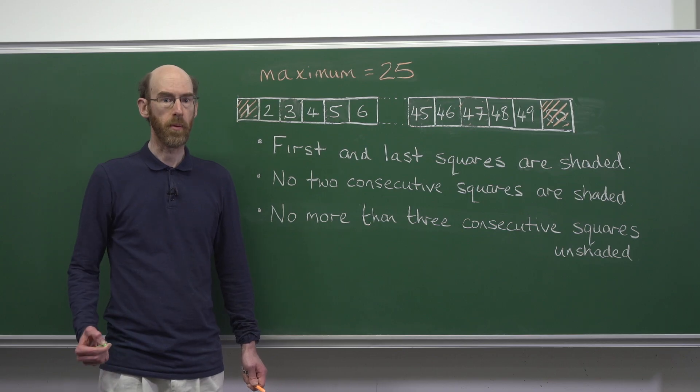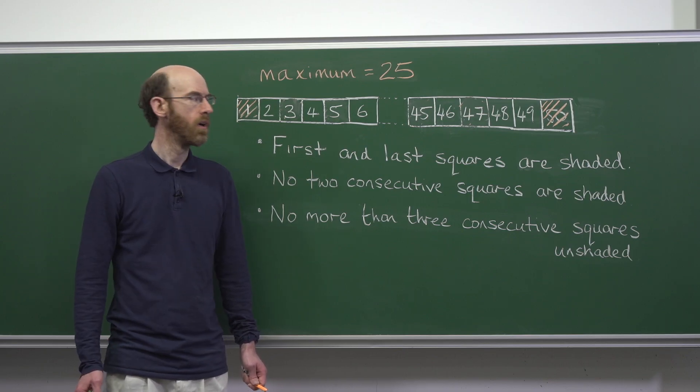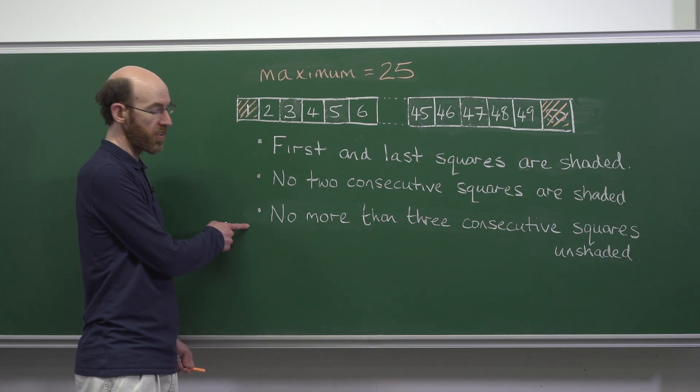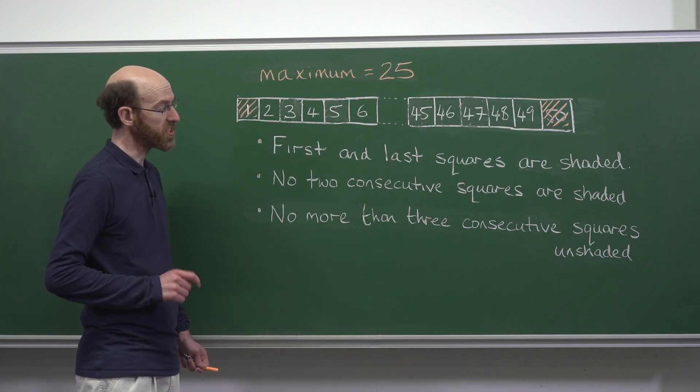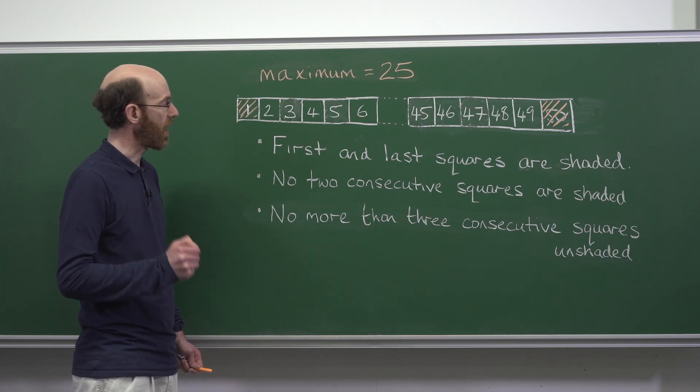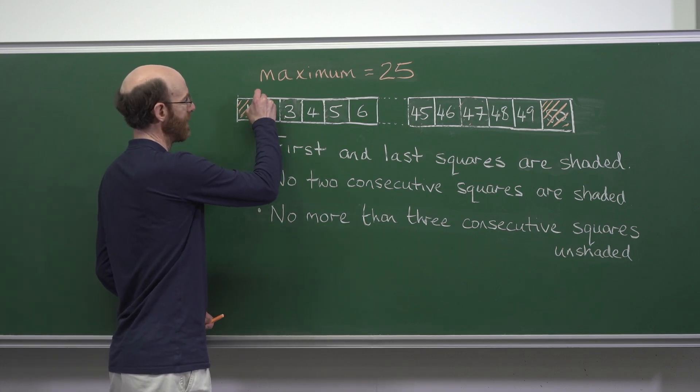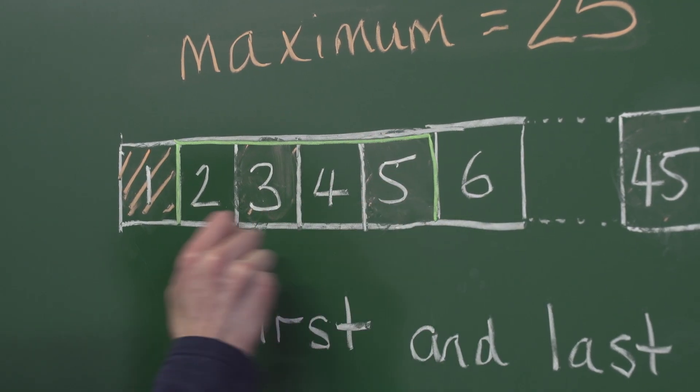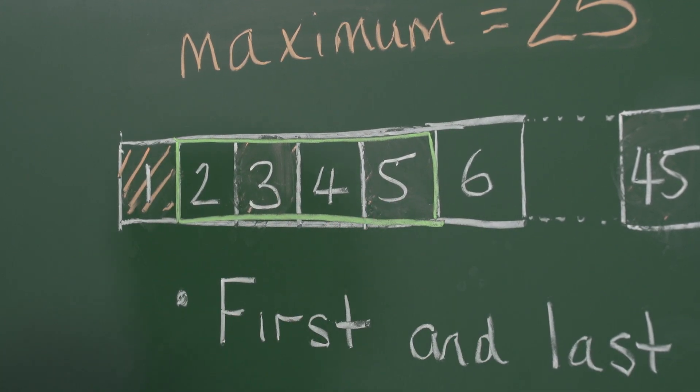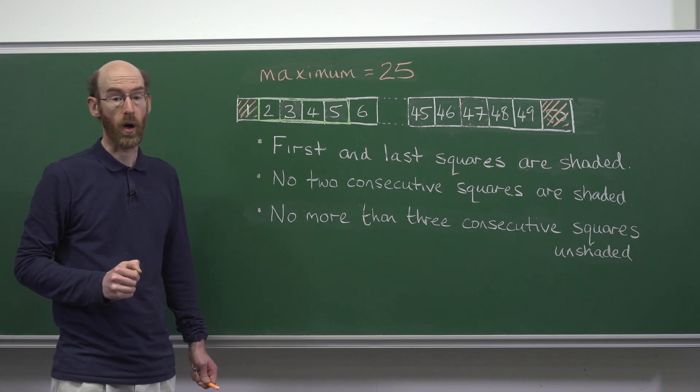Establishing the minimum number of squares we can shade is a little bit more tricky. We refer to the third rule: no more than three consecutive squares can be unshaded. So that means in any run of four we must have at least one shaded.